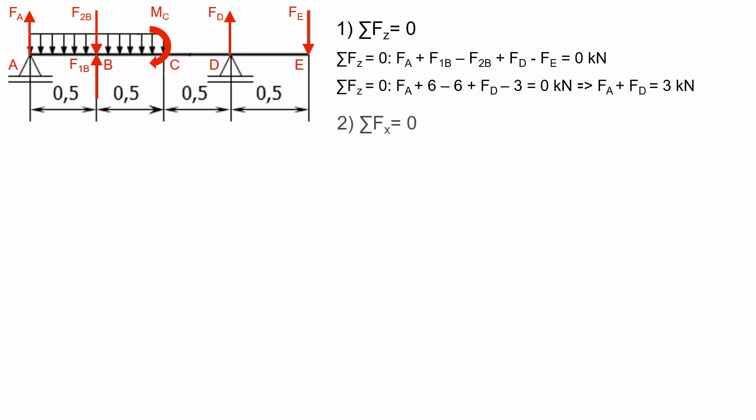The second equation is sum of all forces acting on x axis equal to zero, considering positive x axis points right. We don't have forces acting on the x axis of the beam so this equation won't give us any reactions results in this case.